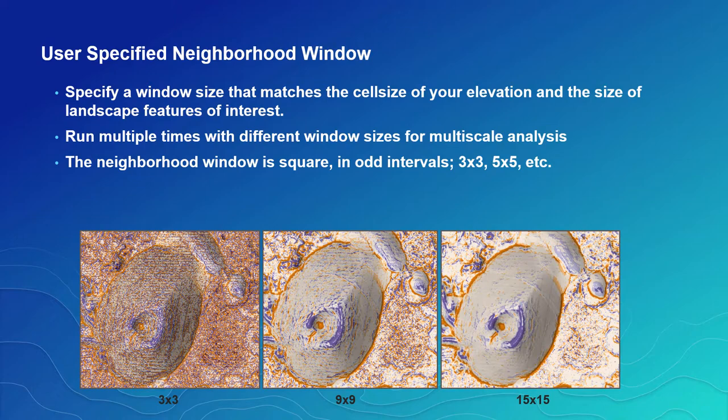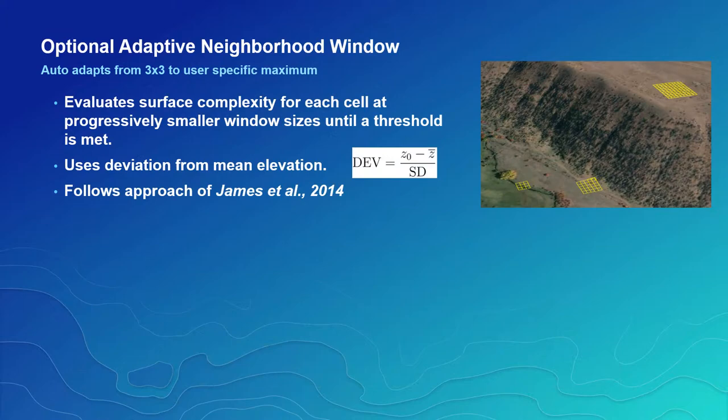We provide a neighborhood window size option, which allows the user to specify a size of window that is appropriate for the DEM resolution and the landscape features of interest. It can also be used for multi-scale analysis by running multiple times with different window sizes. Here you can see the noise in profile curvature with a 3x3 window on the left on a 6 meter resolution DEM. And as the window size increases, the striping artifacts and high-frequency noise become less, and the significant curvature features of the landscape become more prominent.